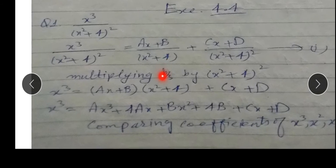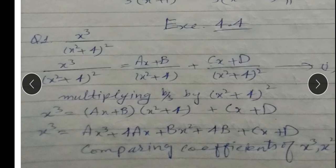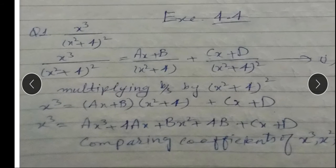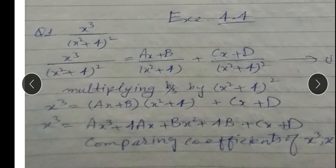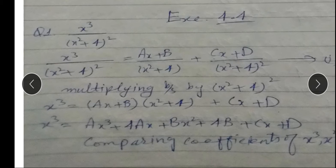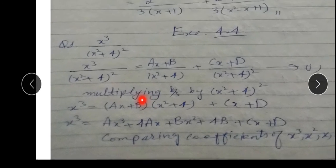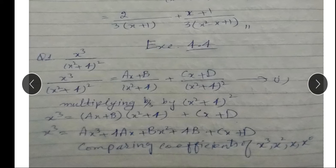Exercise 4.4 Question 1: x³ over (x²+4)². Yeh improper hai kyunki neeche power 4 ban jayegi. Dono quadratic hain aur repeated quadratic factor hai. Partial fractions mein likhenge: (Ax+B) over (x²+4) plus (Cx+D) over (x²+4)² = equation 1. Multiplying both sides by (x²+4)².